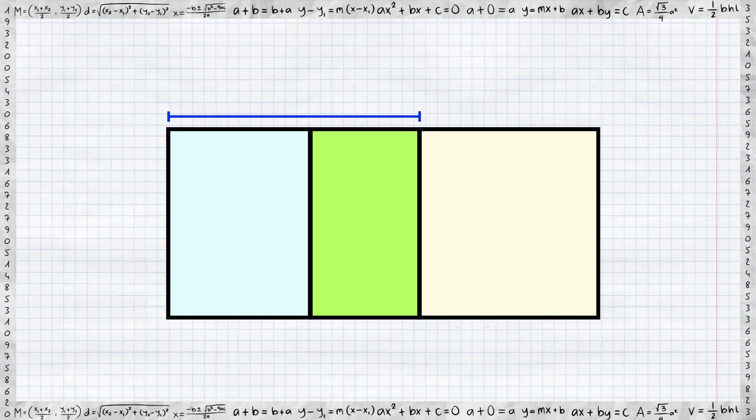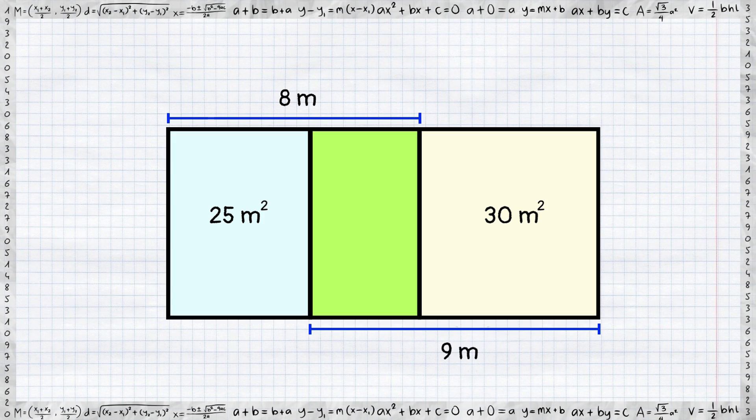The width of the first two rectangles is 8 meters, while the second and the third rectangles together have a width of 9 meters. The area of the first rectangle is 25 square meters, and the third rectangle has an area of 30 square meters.